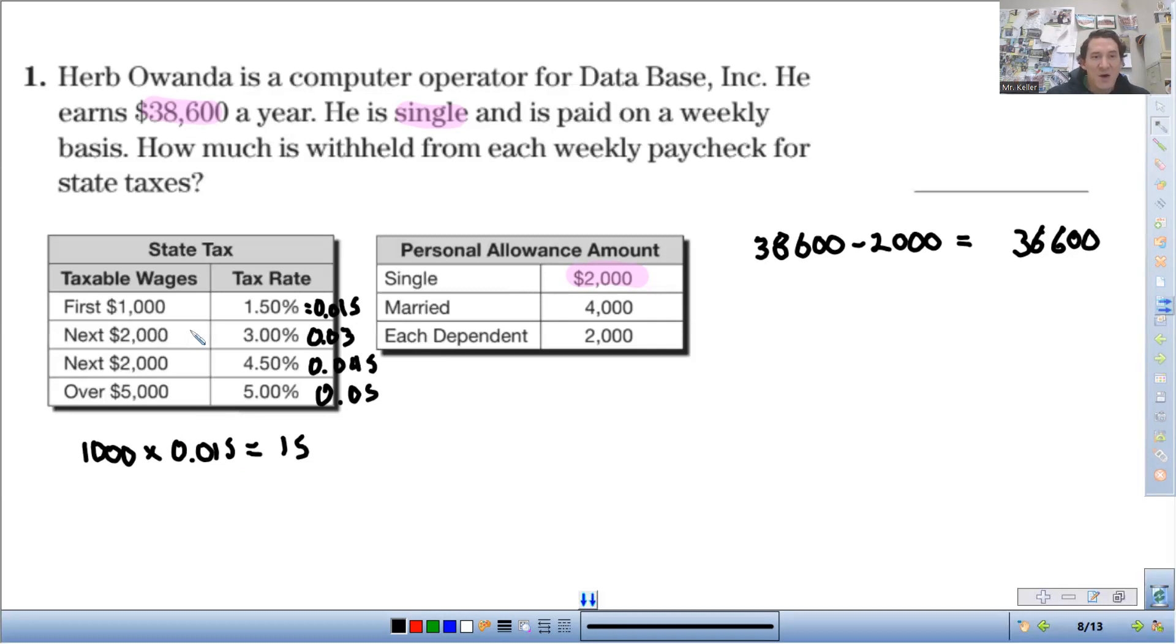Then the next $2,000, so just $2,000 that gets taxed at 3%. So $2,000 times 0.03, that comes out to $60. And then the next $2,000, so $2,000 times 0.045, that comes out to $90. So the first $5,000 gets taxed at a total of $165 if you add all those.